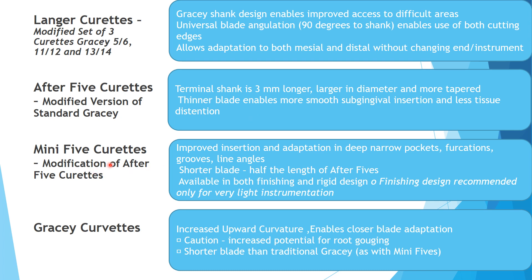Mini Five curettes are a modification of the After Five curettes, with improved insertion and adaptation in deep narrow pockets, furcations, grooves, and line angles. The shorter blade is half the length of the After Five, available in both finishing and rigid design — the finishing design is recommended only for very light instrumentation. Gracey Curvette modifications have increased upward curvature enabling closer blade adaptation, with increased potential for root gouging to be noted; the blade is shorter than the traditional Gracey, similar to the Mini Five.